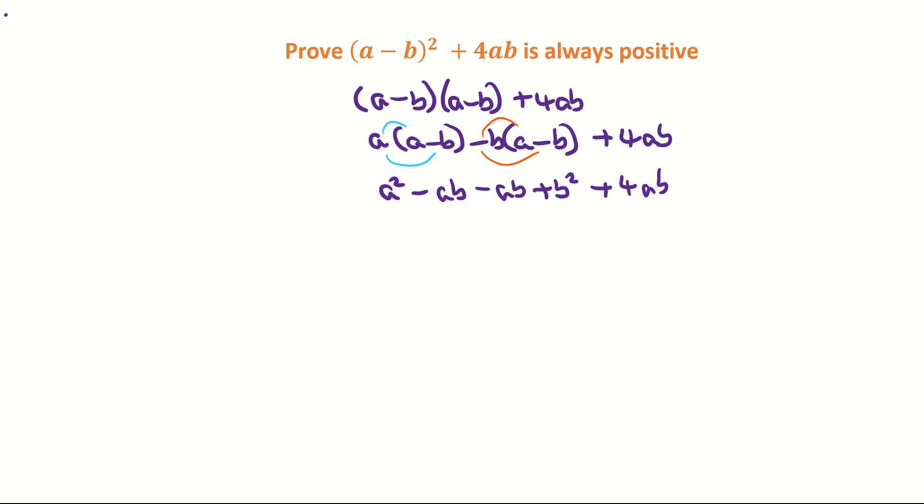We are just going to tidy it up a bit here. I'm going to group the minus ab and the minus ab together and that's going to make a² - 2ab + b² + 4ab.